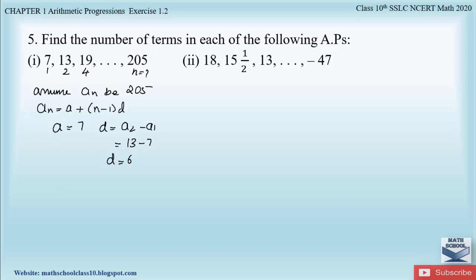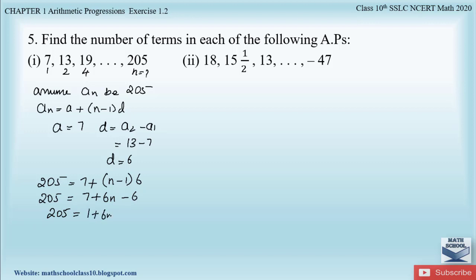Substituting all values: 205 = 7 + (n − 1) × 6. This gives 205 = 7 + 6n − 6, so 205 = 1 + 6n. Transferring 1 to the left-hand side: 205 − 1 = 6n, therefore 204 = 6n.